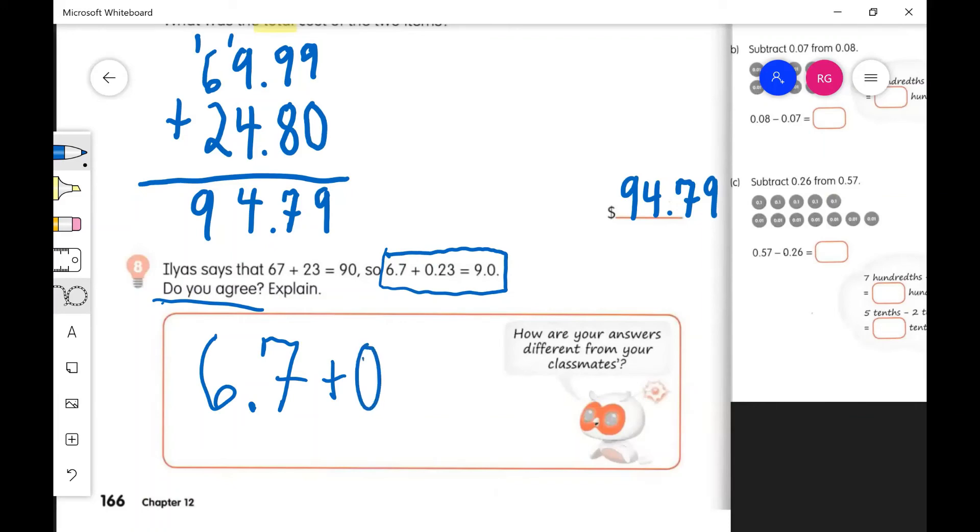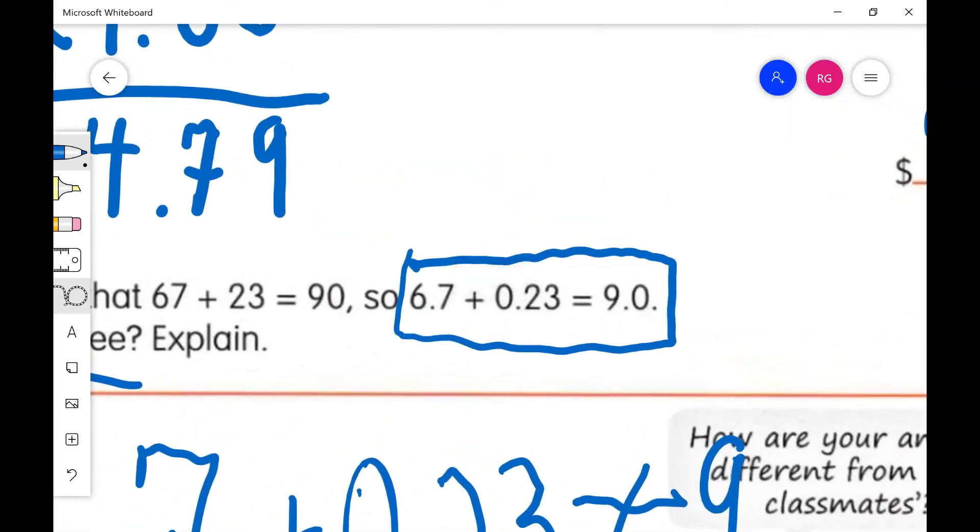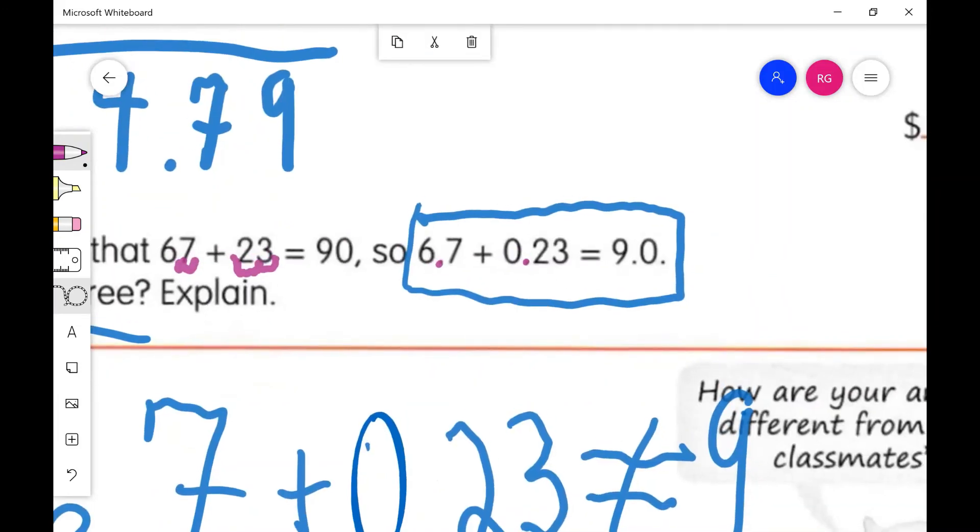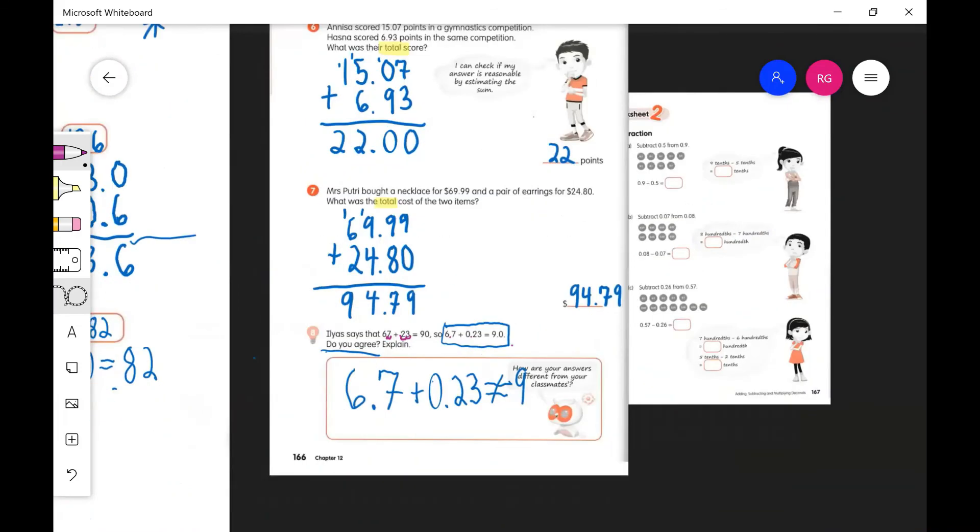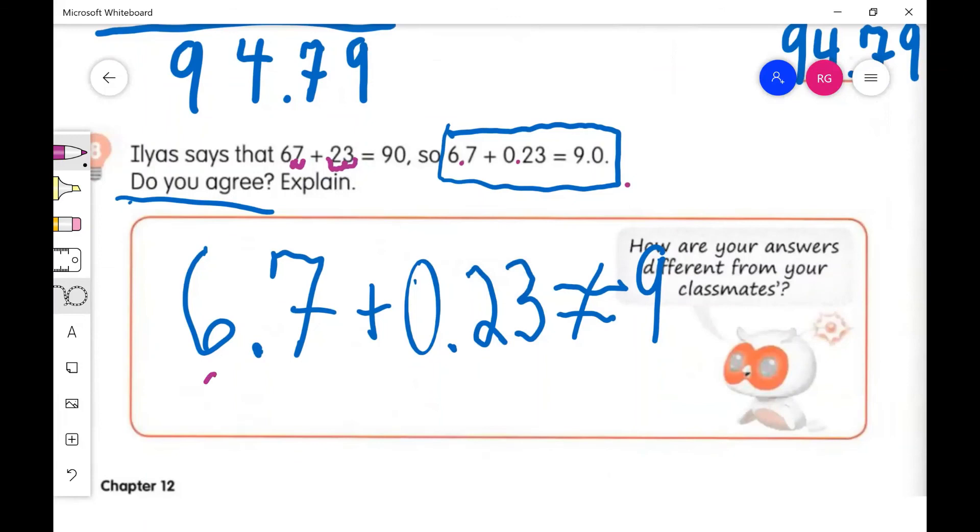Because 7 has the whole number but 0.23 doesn't have whole number. Yeah, I agree. I just wrote 6.7 plus 0.23 does not equal 9. If we took a closer look here, they moved the decimal one place to the left to get 6.7, and for 23 they moved it two places for 0.23. So they divided that number by 100 for the second number and the first number by 10. They need to divide by just 10 for both numbers.